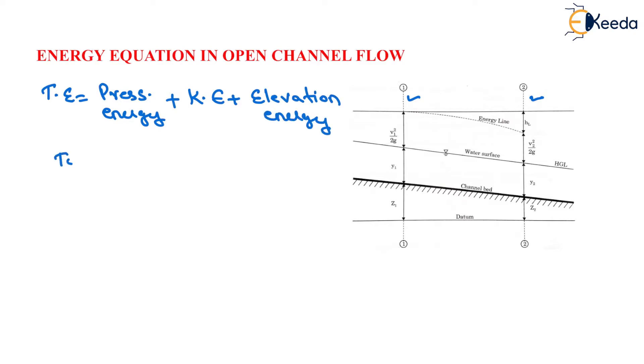So, total energy divided by weight will be equals to total energy head which will be equals to P upon gamma plus V square upon 2G plus Z.